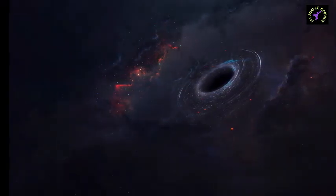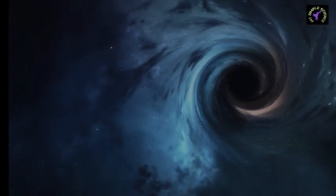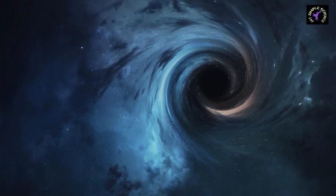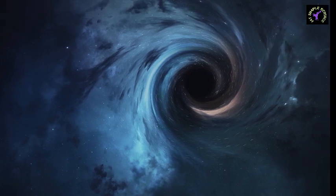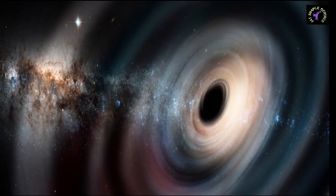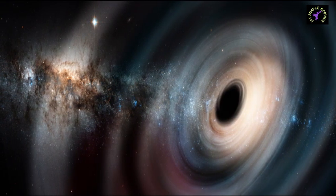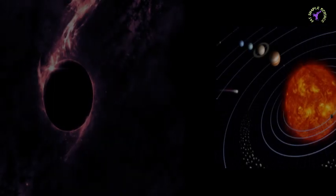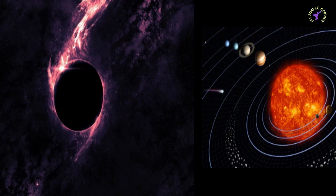There is probability of a supermassive black hole present nearer to Earth's solar system than V616 Monocerotis, which is 3,300 light years away from us. In the future, if Earth's solar system comes in the range of gravity of such an isolated supermassive black hole, then the whole solar system along with Earth may get swallowed by it.